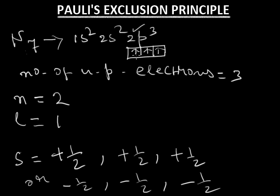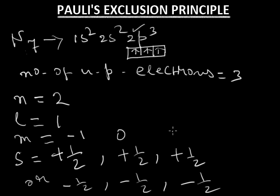If the first electron has spin quantum number plus half, then the second and third also have spin quantum number plus half. These three electrons thus share three quantum numbers: principal quantum number, azimuthal quantum number, and spin quantum number. But they have different magnetic quantum numbers — minus 1, 0, and plus 1. This demonstrates Pauli's exclusion principle: no two electrons in the same atom can have all four quantum numbers the same.